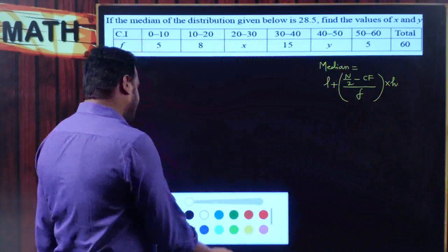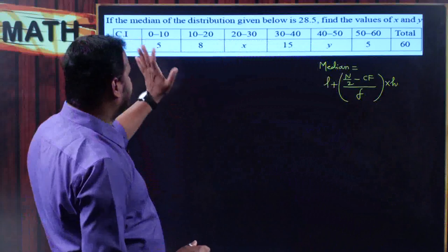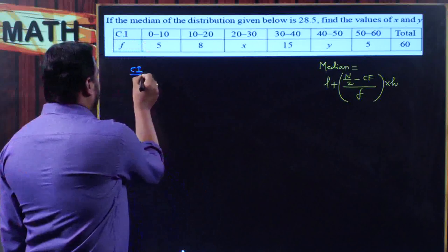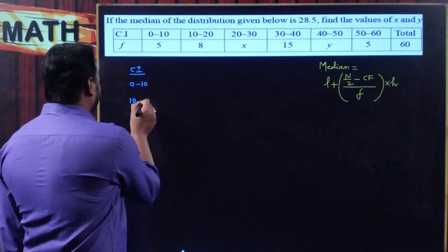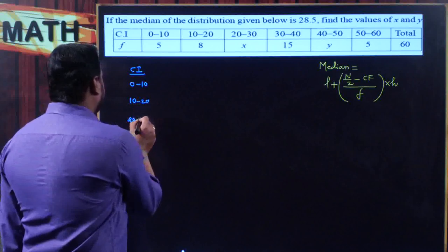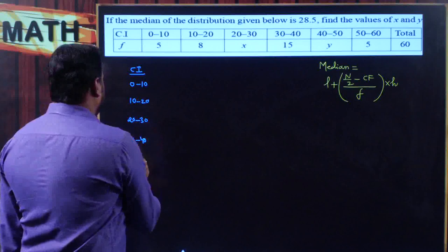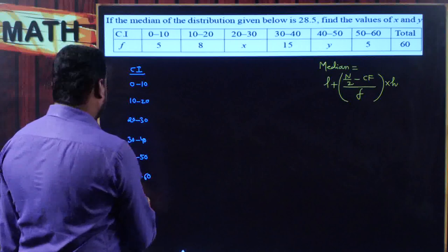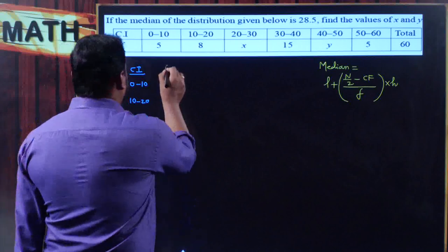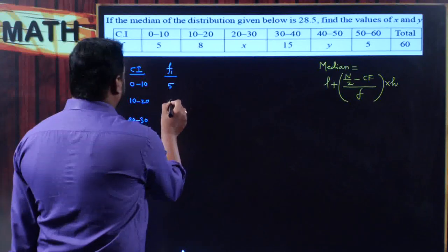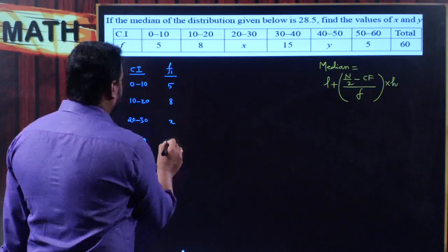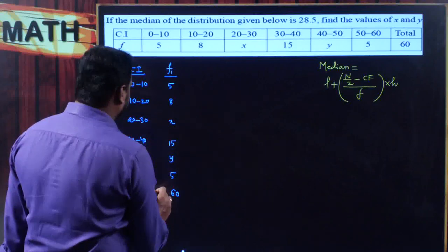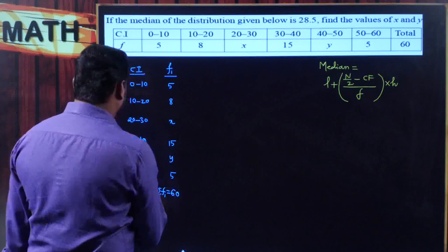The class intervals are 0–10, 10–20, 20–30, 30–40, 40–50, 50–60, and the corresponding frequencies are 5, 8, x, 15, y, 5. The total Σfi = 60.